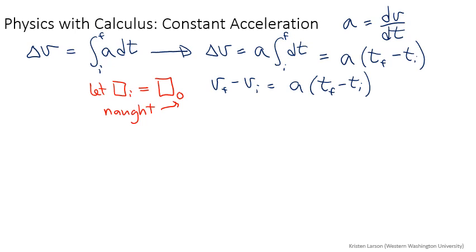And then usually what we do is we let the final value just be by itself then without any particular subscript. So then this becomes v minus v naught is a times time. And the other weird thing that we do is we also let t initial be equal to zero. So we're left just with this.